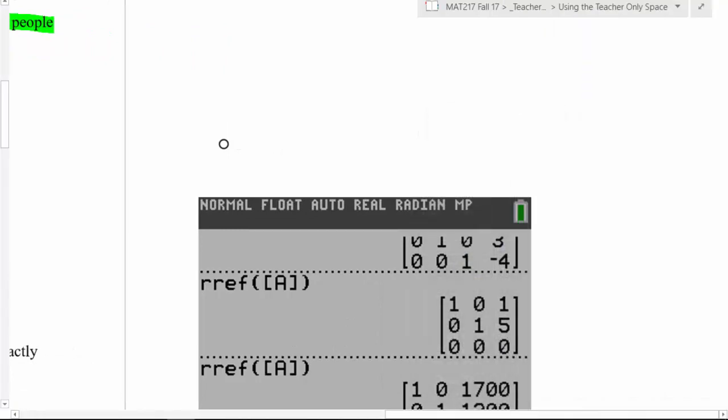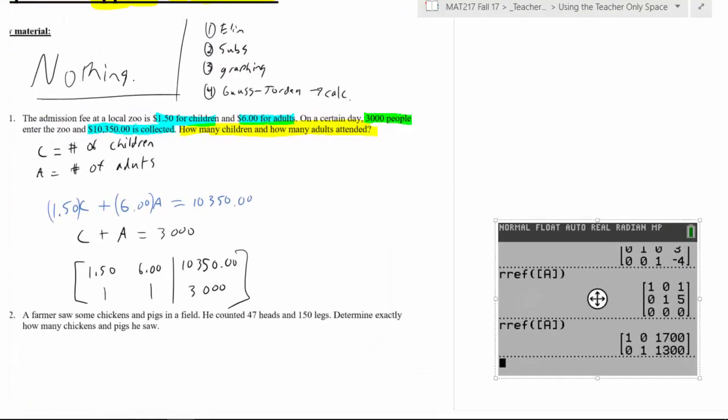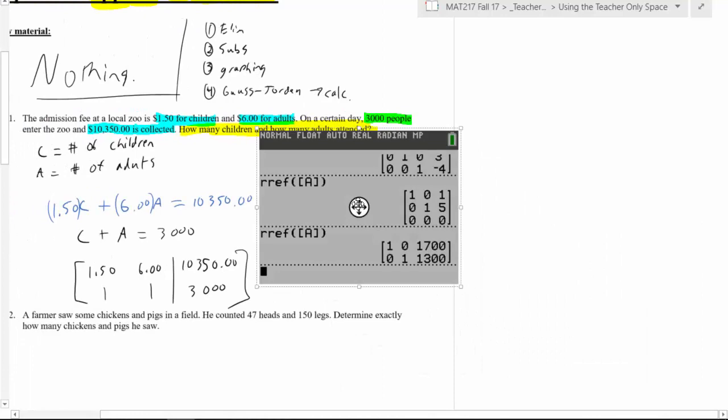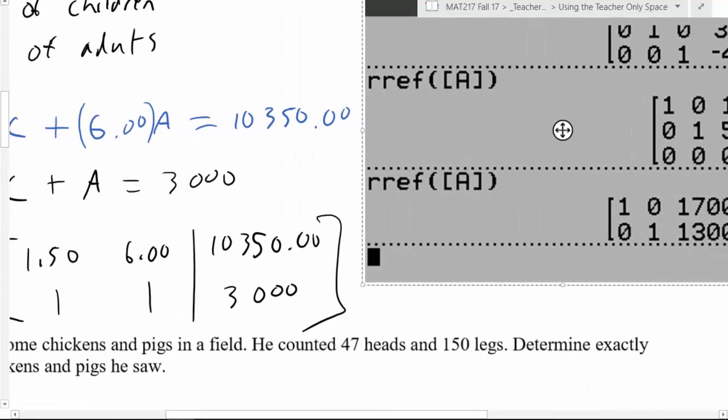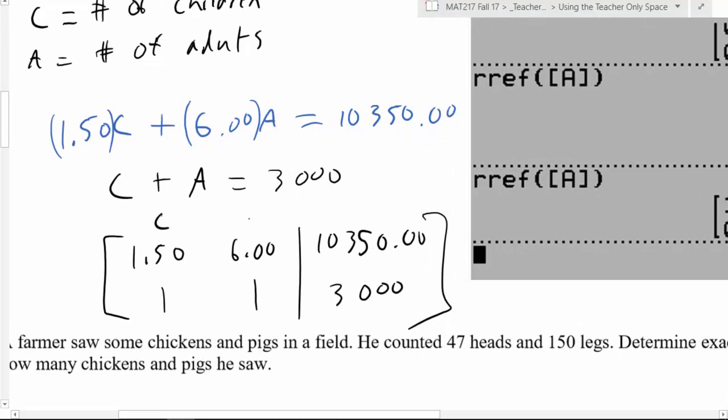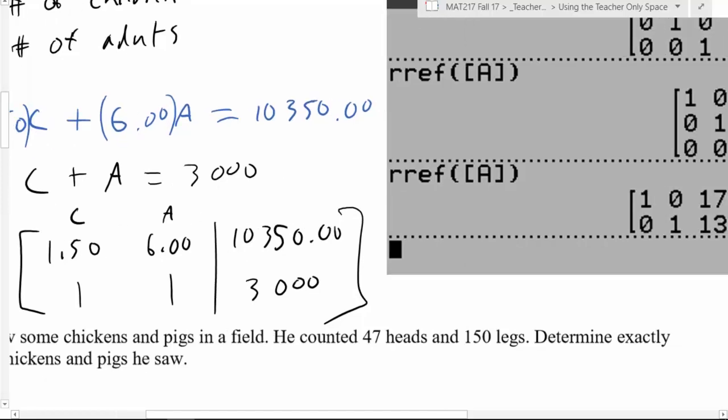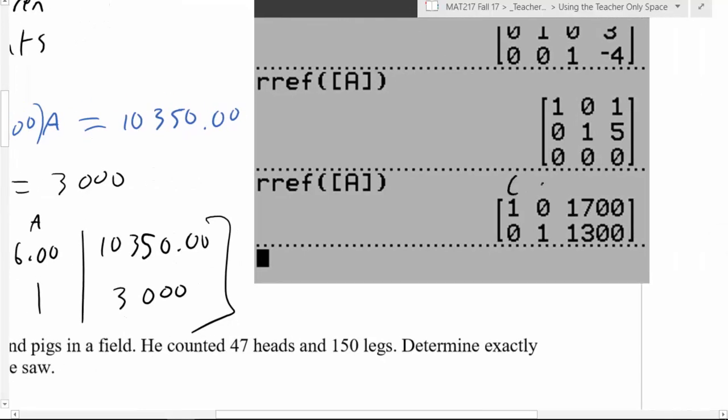So what does this mean? Here we go, I'm going to take this and pop this into my notes right here. So how do I read this? Well, this is telling me, now don't forget what each column stood for. This is why sometimes it's good to label them. So the first column was C, the second column was A, so therefore this means C equals 1,700, A equals 1,300. So there were 1,700 children and 1,300 adults, and that makes sense.